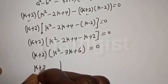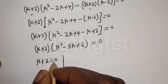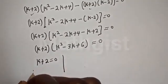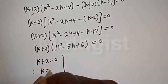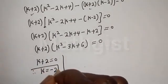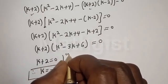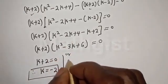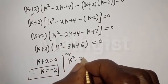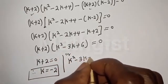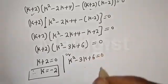The first case: k + 2 equals 0, therefore k equals minus 2. The second case: k squared minus 3k + 6 equals 0, which is a quadratic equation.